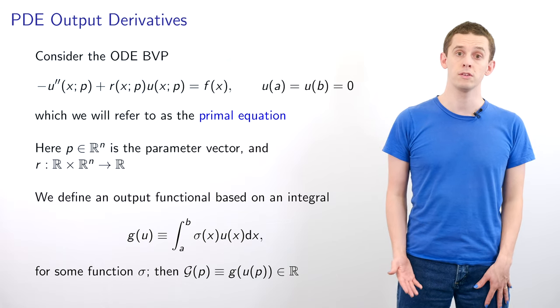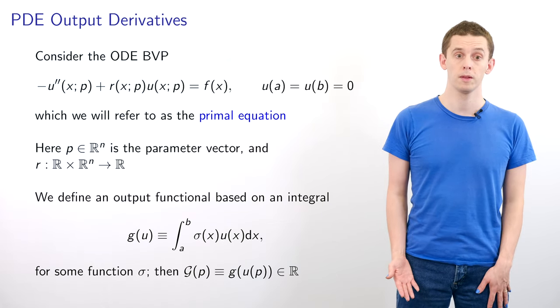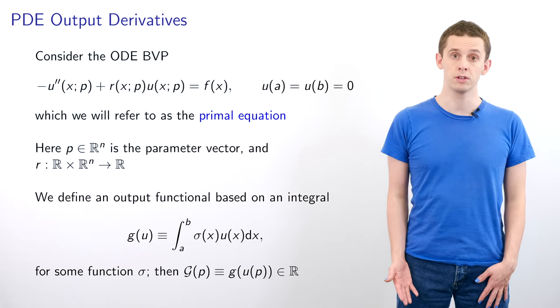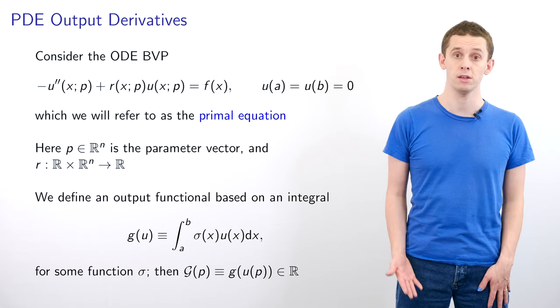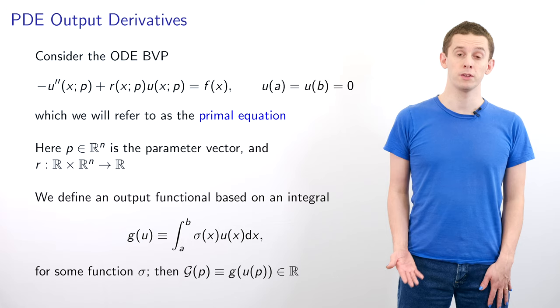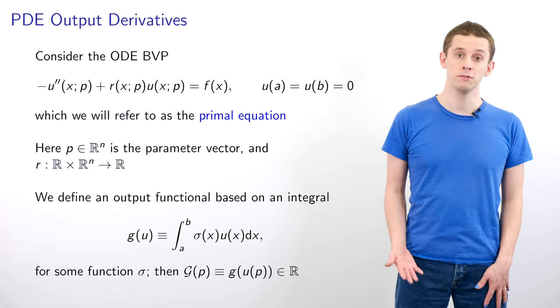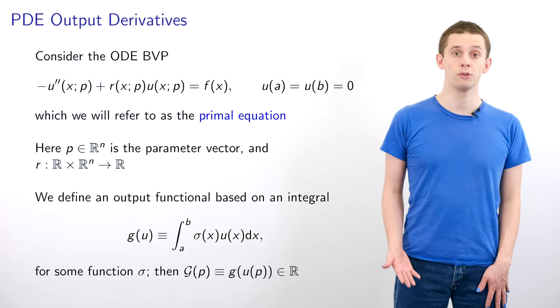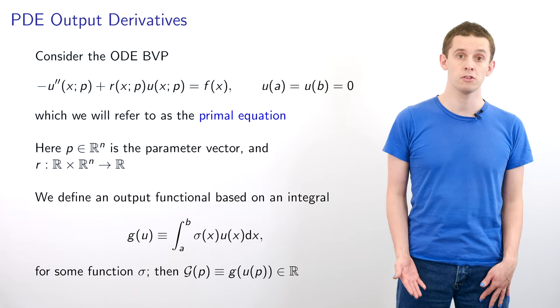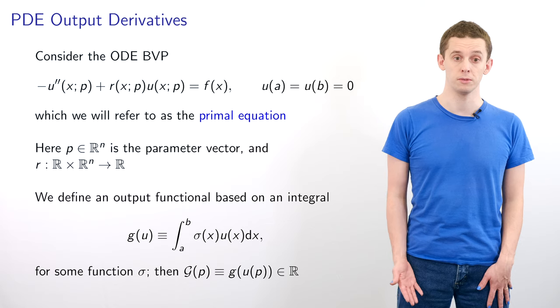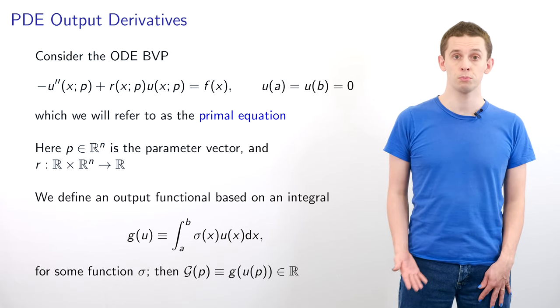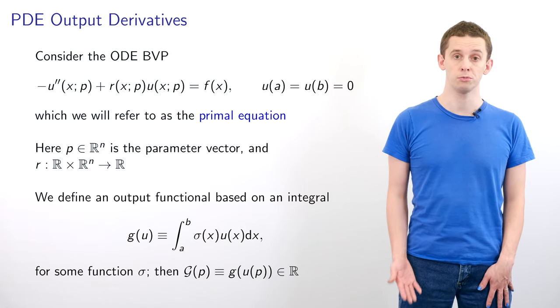We'll refer to this as the primal equation, where p is an n-dimensional parameter vector and r is some arbitrary function. We define the output functional g as the integral from a to b of σ(x)u(x;p)dx, where σ is some arbitrary function. Then we define our original G(p) as g(u(p)).